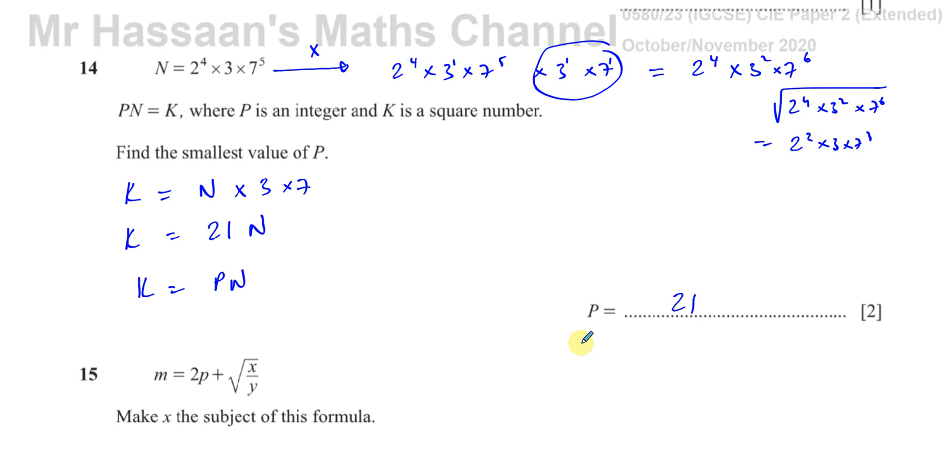All right, so there's the answer to number 14. I hope that was clear. This is all to do with prime factors and the definition of a square number when you think about a number split up into its prime factors. Okay, so that's 14 done.